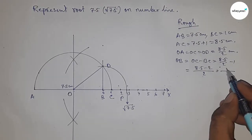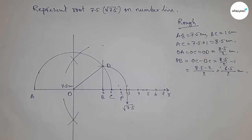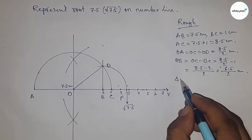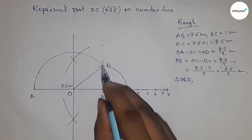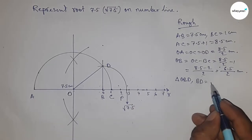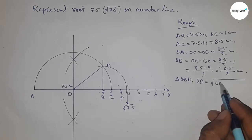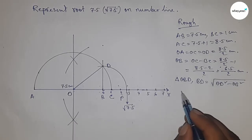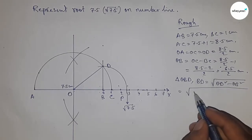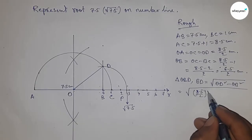Now from right angle triangle OBD, we can write BD equals, by Pythagoras theorem, OD squared minus OB squared. So putting the value of OD and OB.